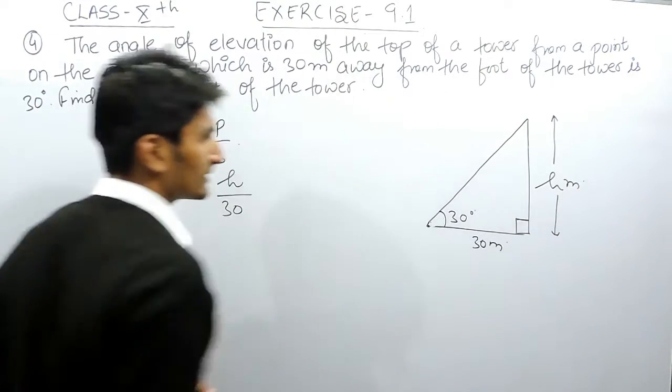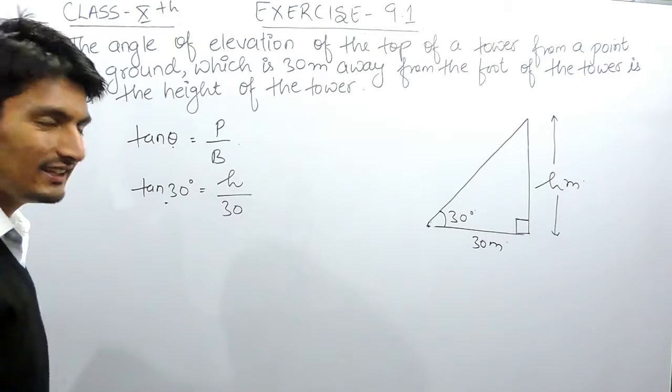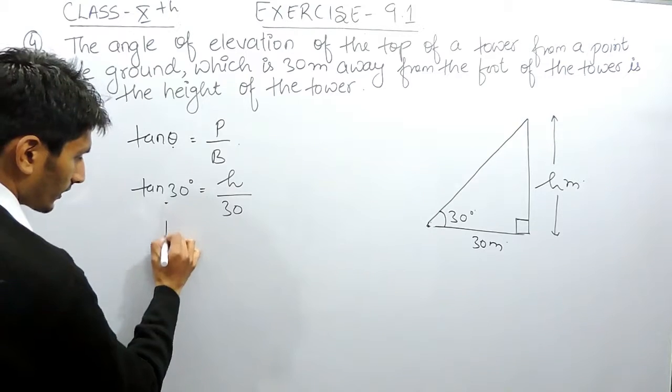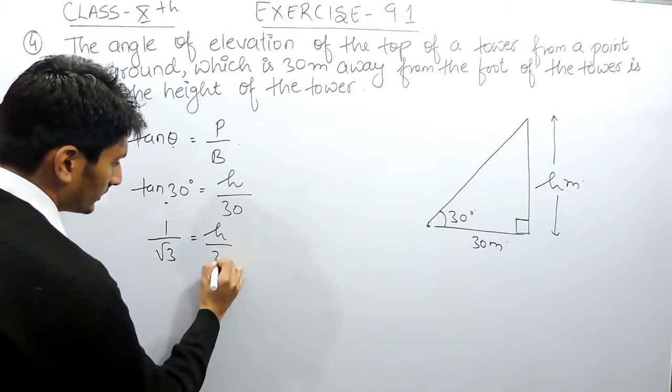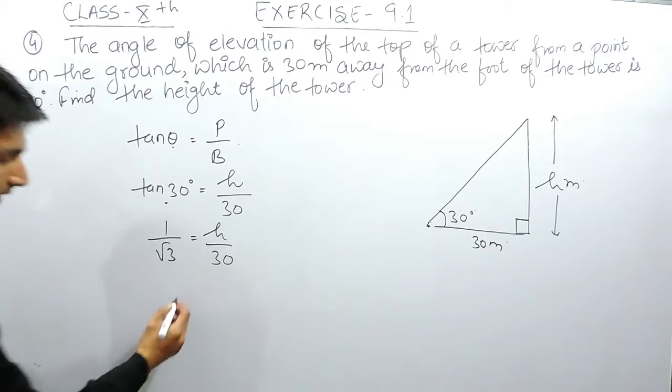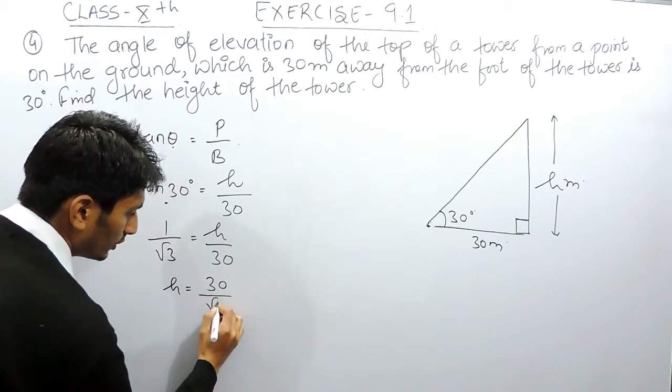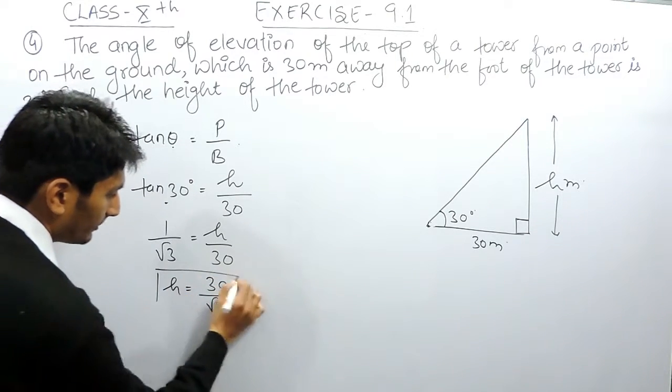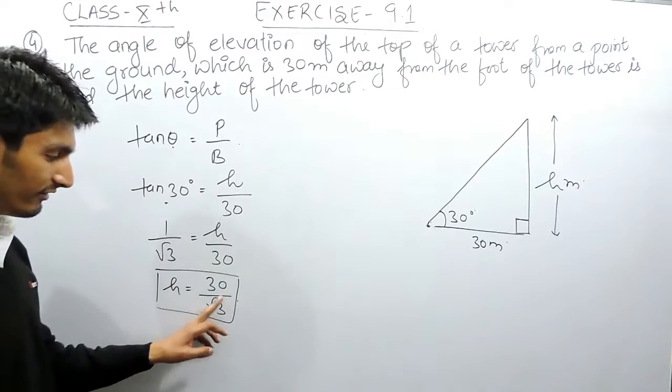Let's suppose this is h meters. The value of tan 30 is 1 by root 3, which equals h upon 30. Cross multiplying 30 with 1, h will become equal to 30 upon root 3. This will be the height of the vertical tower.